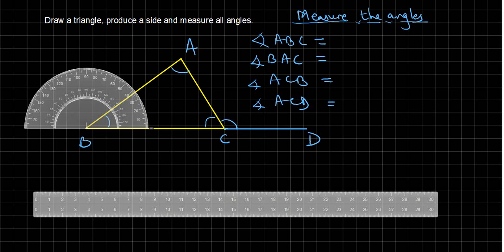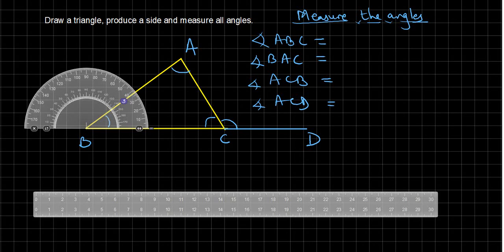I have drawn triangle ABC, then I have extended BC to D. There are three angles of a triangle, and one exterior angle of the triangle is formed. ACD is called an exterior angle of the triangle. If we produce AC to this side, you will get another exterior angle. That side can be produced anywhere — that is the exterior angle.